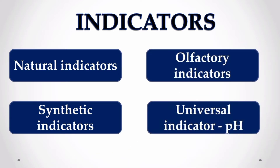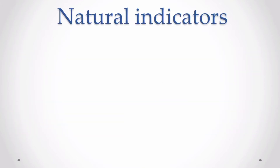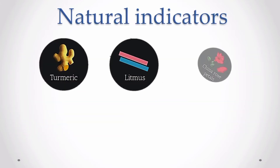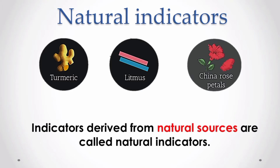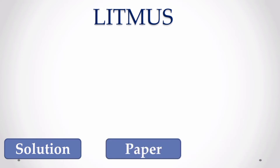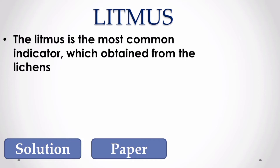Some common types of indicators are natural indicators, synthetic indicators, olfactory indicators, and universal indicator. Let us discuss each one in detail. Natural indicators, as the name suggests, are indicators obtained from natural sources. We know turmeric and china rose are parts of plants. Litmus is a very common acid-base indicator used in school laboratories and is available in the form of solution or paper. Litmus is extracted from lichens, which is a symbiotic association between algae and fungi.